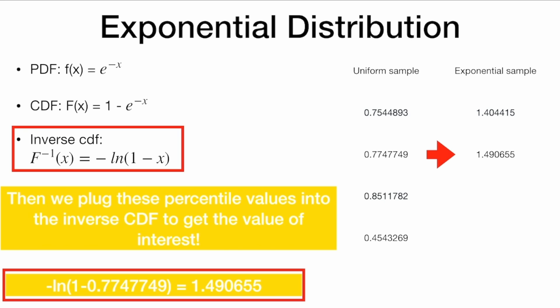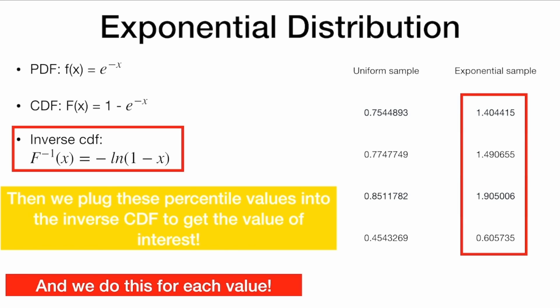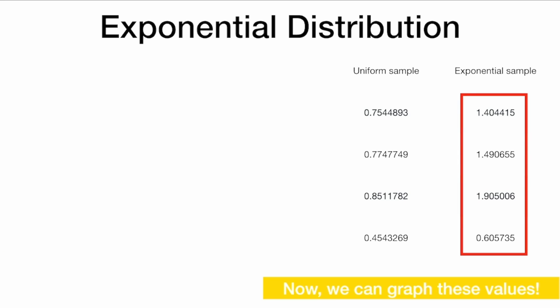Similarly, I plug in the other values into the inverse CDF, the negative natural log of 1 minus x. And we do this for each value. Now, we can graph these values instead. And look at them. They look like an exponential distribution.